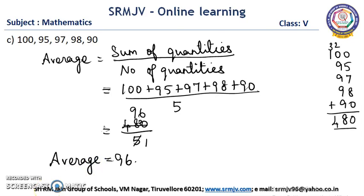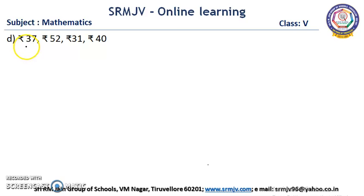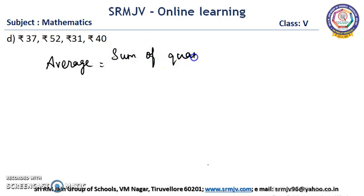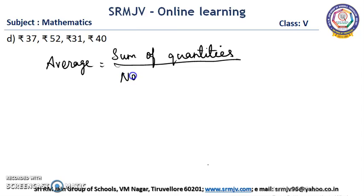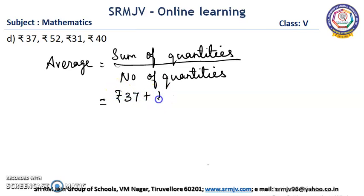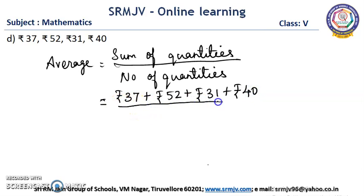Is it clear, children? The next question is rupees 37, rupees 52, rupees 31, and rupees 40. Now we have to find the average. So average is equal to sum of quantities divided by number of quantities. To find the sum of quantities we have to add the given amounts. The number of quantities is 4.